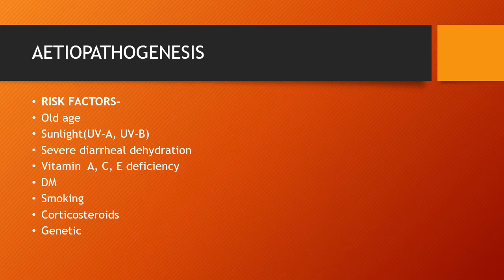Coming to the etiopathogenesis, risk factors for cataract are old age, sunlight containing ultraviolet A and B rays, severe diarrheal dehydration, vitamin deficiency like vitamin A, C and E deficiency, then diabetes mellitus, smoking, corticosteroids, and other genetic factors.